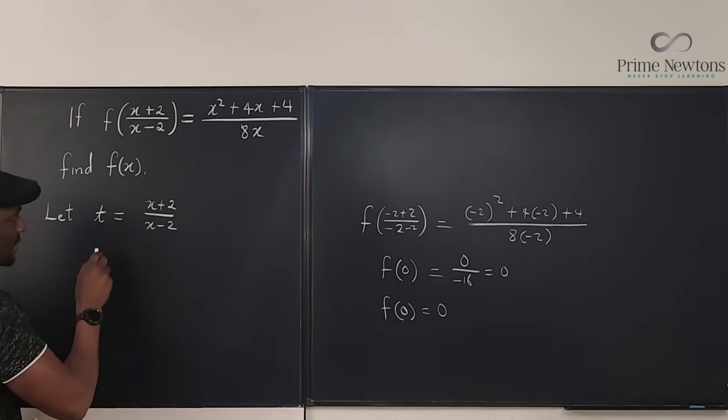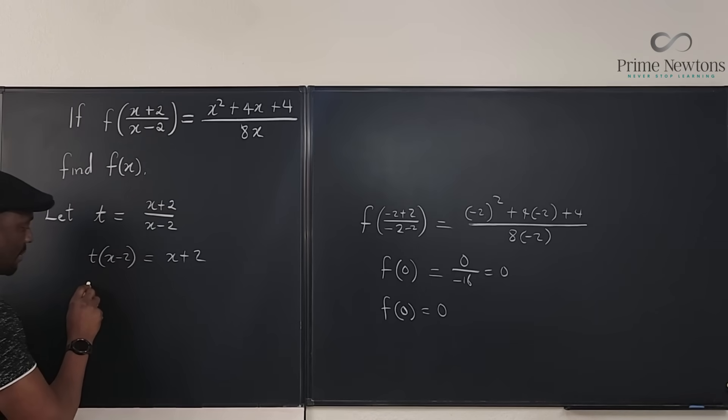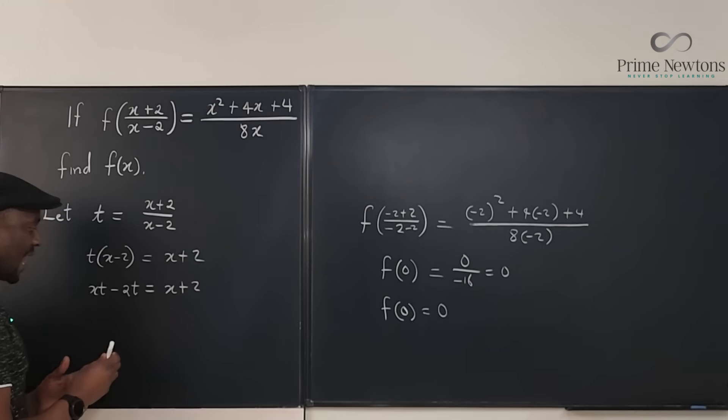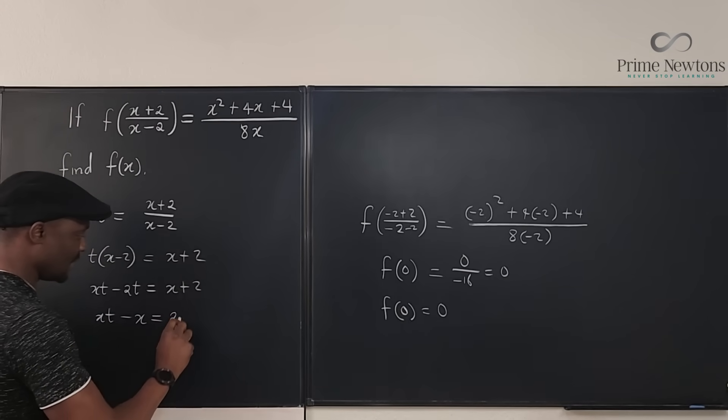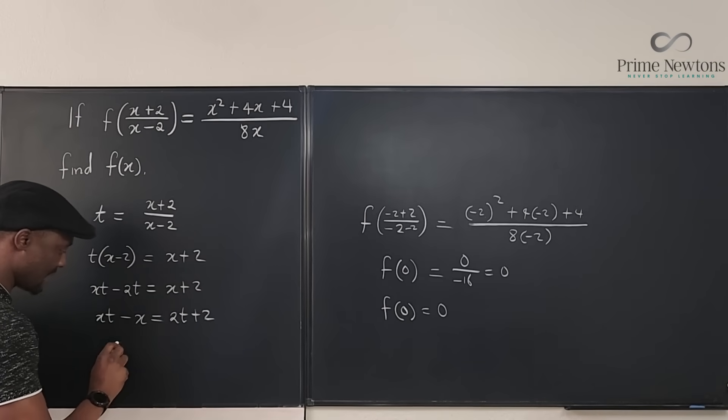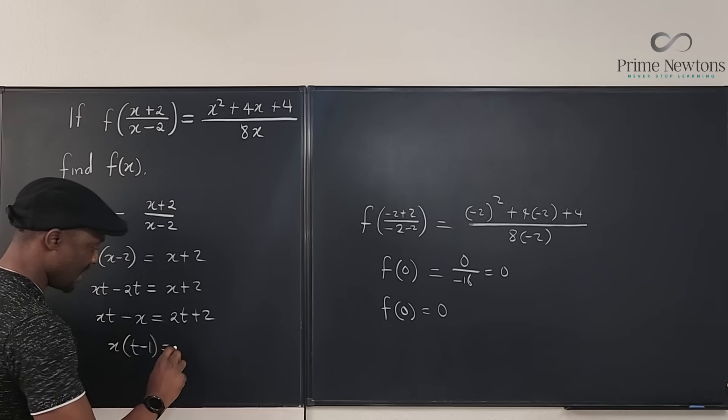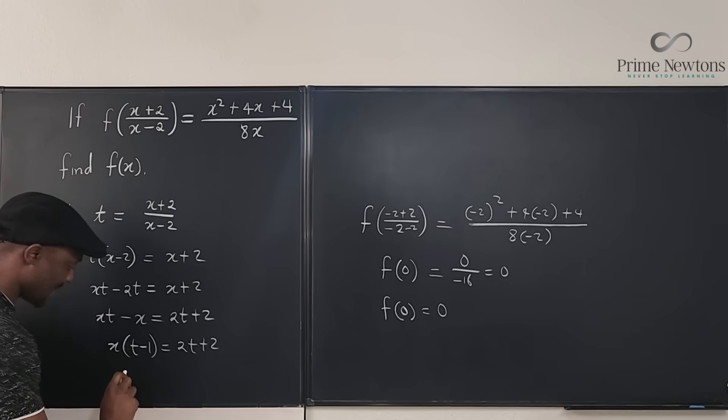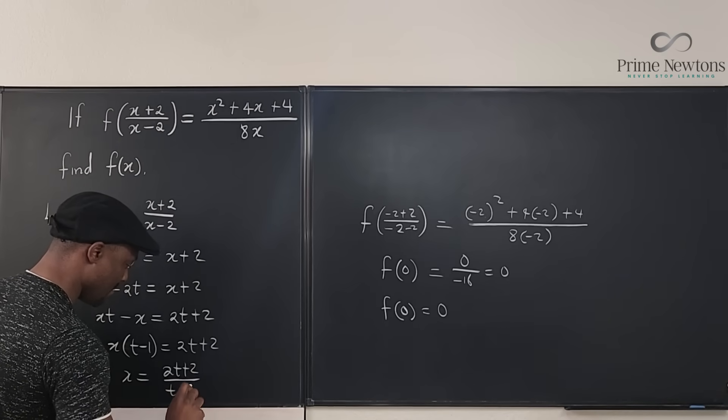So let's clean this up. We're going to have t times x minus 2 equals x plus 2. And then we have xt minus 2t equals x plus 2. Put all the x's together, we got xt minus x equals 2t plus 2. So x will be equal to, let's factor x, we have t minus 1 equals 2t plus 2. And what do we have left? We've got x will now be equal to 2t plus 2 over t minus 1. This is the key to where we're going.